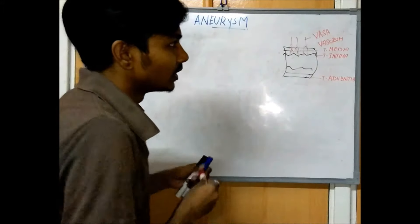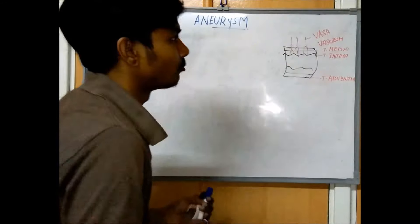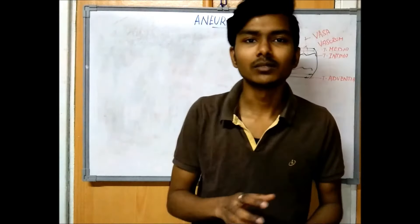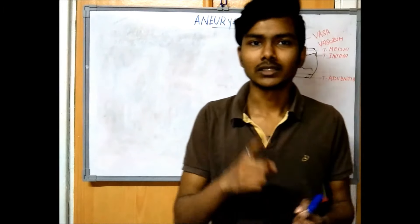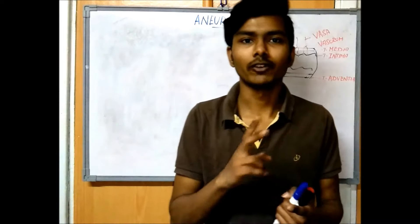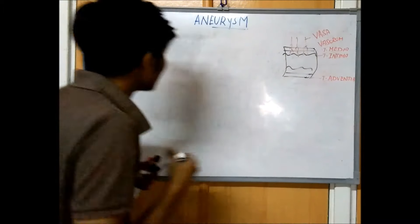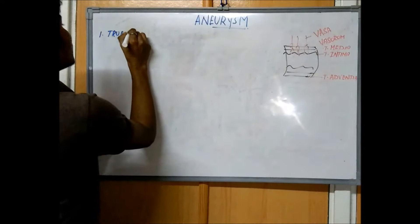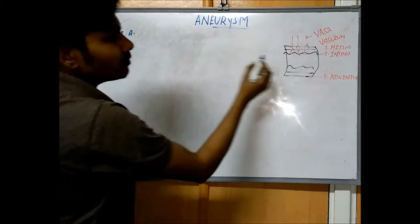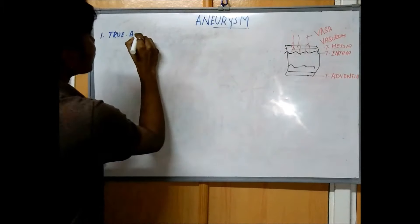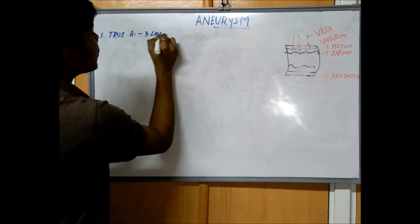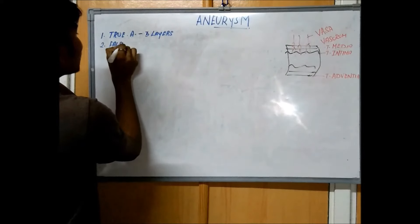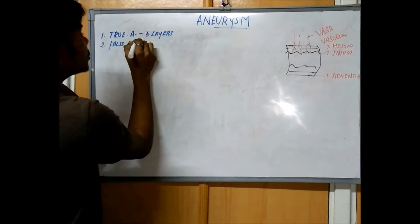Thinking about these three layers and the network of blood vessels which supply them — mainly aneurysm, we have two types. One is true aneurysm, which affects all three layers, and the other is false aneurysm, also called pseudoaneurysm.